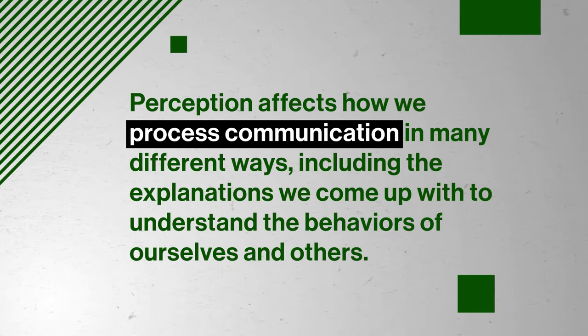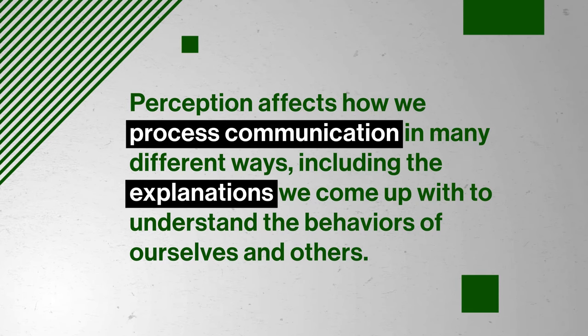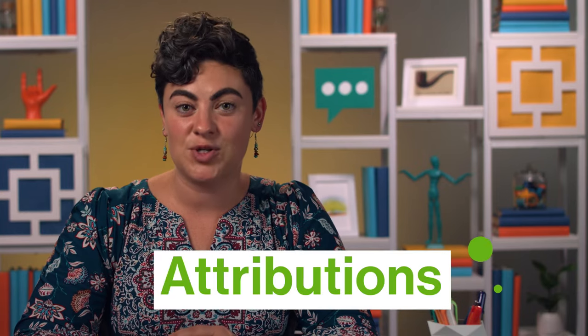Perception affects how we process communication in many ways, including the explanations we come up with to understand the behaviors of ourselves and others. During communication, our brains run through a continuous series of why questions. The answers we come up with to explain the why behind behaviors we observe are called attributions. For instance, if your professor is late to class, you might wonder: did she stop for coffee, get caught up with a student, or was class canceled and you missed the memo? All of those answers to your why questions are attributions to explain your professor's behavior.